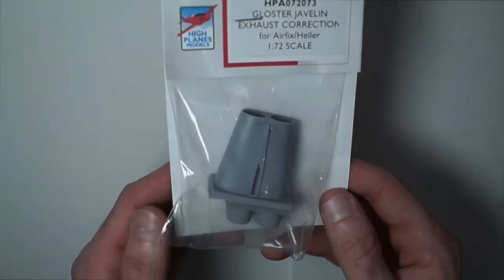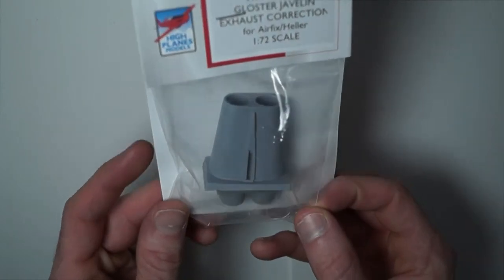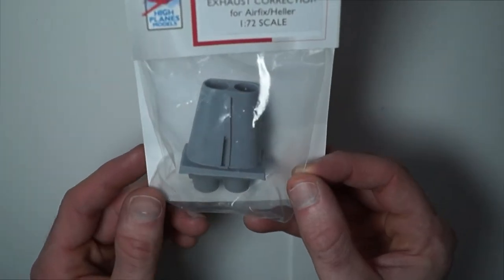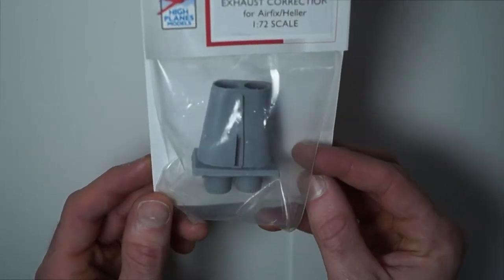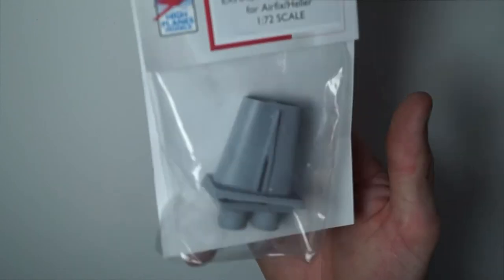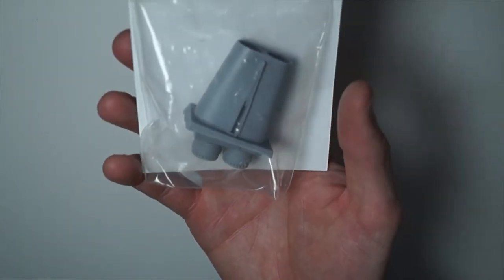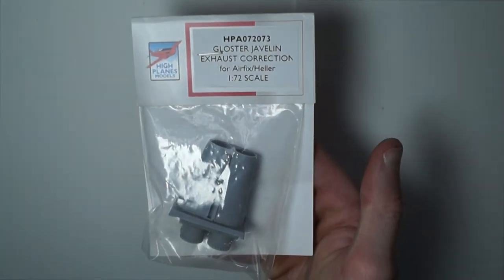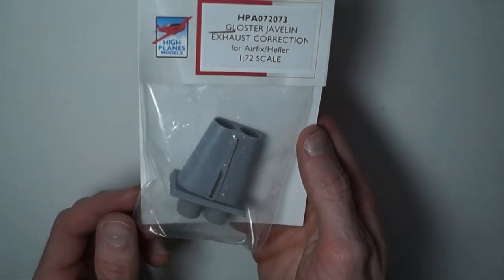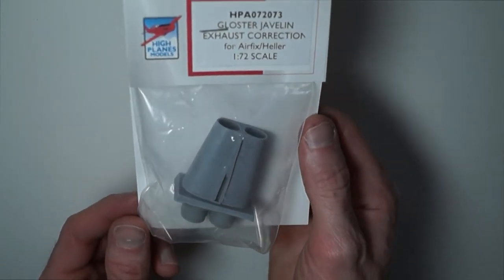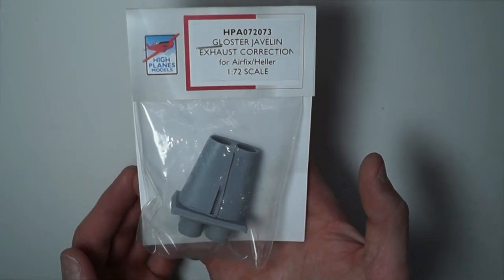I have already purchased the Gloster Javelin exhaust correction. As I have looked on Brit Modeller forums and then everyone on there suggested to get the aftermarket as the kit itself is slightly incorrect but it is the best one to get if you want to build a Javelin.